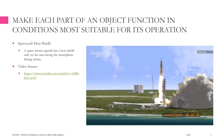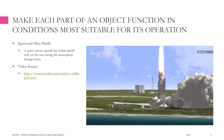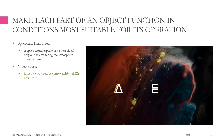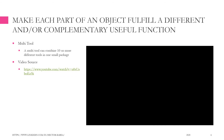The Orion spacecraft is a big part of NASA's plans, as well as the Space Launch System and Human Landing System. Make each part of an object fulfill a different and/or complementary useful function. For example, multi-tool: a multi-tool can combine 10 or more different tools in one small package.